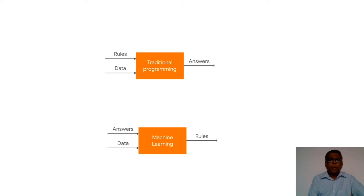In traditional programming, we give data as well as algorithm rules, and then we get the answers. In machine learning, we give data as well as answers or some relationships, and based on that the machine learns about the data and gives interpretations.